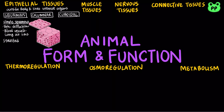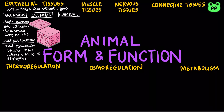Stratified squamous epithelia regenerate rapidly. They are found at abrasion sites such as outer skin, linings of the esophagus, anus, and vagina.